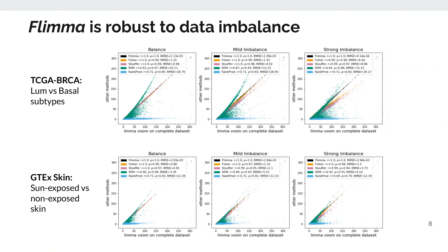Here we see that in case of imbalanced data, and especially in the case of strong imbalance, meta-analysis results diverge from the results of centralized analysis. In contrast, FLIMA always produces the same results — the black dots corresponding to FLIMA results are always aligned along the diagonal.